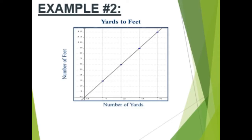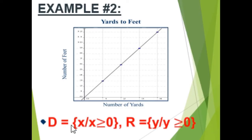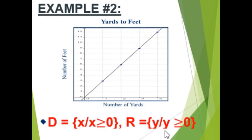Example number two. Observe the graph. We have a coordinate plane with positive x and positive y. The domain of the function is the set of all x such that x is greater than or equal to zero — so zero is included. And the range of the function is the set of all y such that y is greater than or equal to zero.